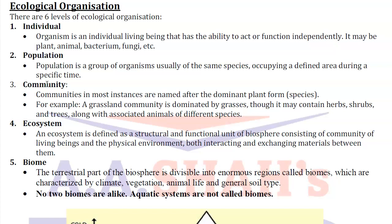Ecosystem is the entire structural and functional unit of the biosphere, comprising of living things as well as non-living things - it has both biotic and abiotic factors. Then we come to Biome. An important point about biomes is that aquatic systems are not called biomes, and no two biomes are alike. Biomes are the terrestrial part of the biosphere divisible into normal regions, each with specific climate, vegetation, and animal life.